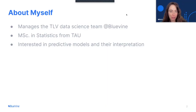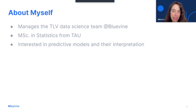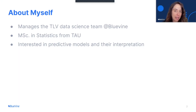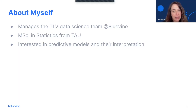A few words about myself. I manage the TLV data science team at BlueVine, which is a fintech startup that helps small and medium businesses in the United States to get the financial services they need — a bank account, loans, and debit cards. In the data science team, we work on various business problems while utilizing machine learning techniques. For example, we assess the client's risk before getting a loan, we identify fraud, and we analyze clients' behavior in order to help with marketing and sales initiatives.